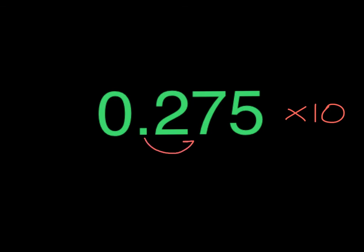Now, we will review what happens to numbers when we multiply by multiples of 10. If we multiply 0.275 times 10, we will move the decimal point 1 time to the right, and it will become 2.75.